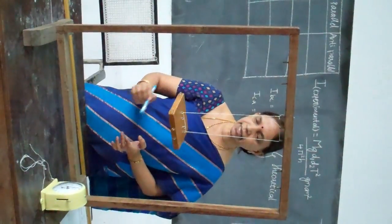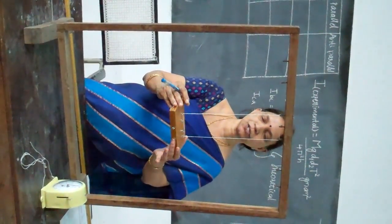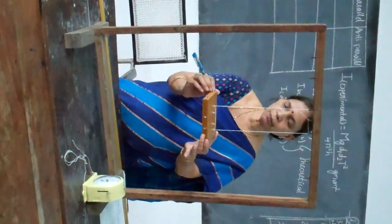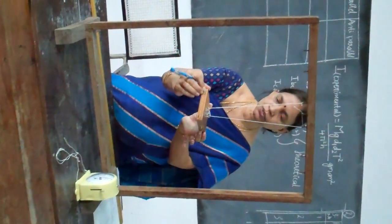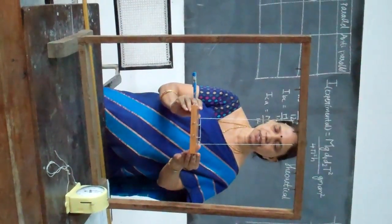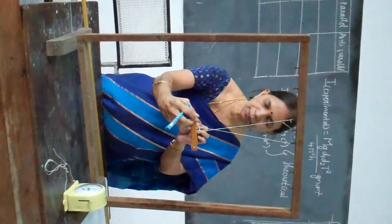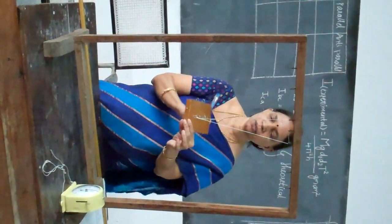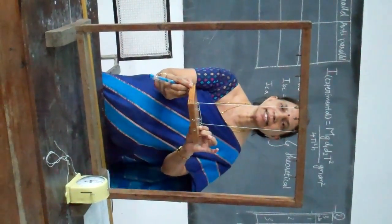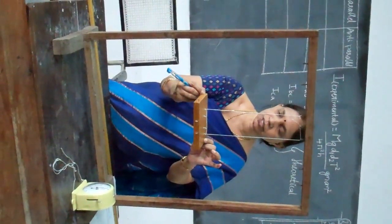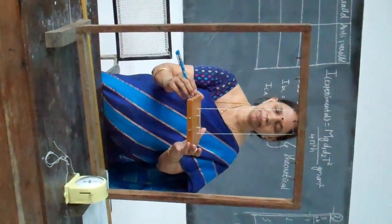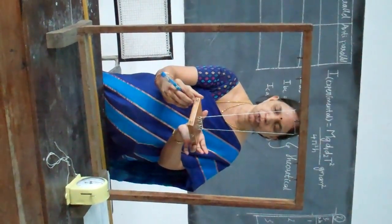This is the oscillation, and this is your mean position or the equilibrium position. From here you turn to one side and release it. Mean position, to one extreme, back to mean, to the other extreme, and come back — this is considered to be one oscillation. You can see that it is stable.